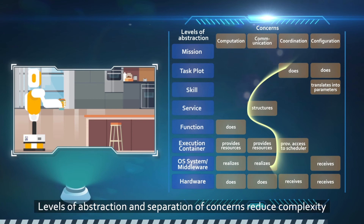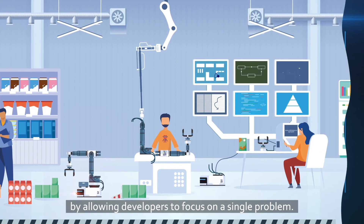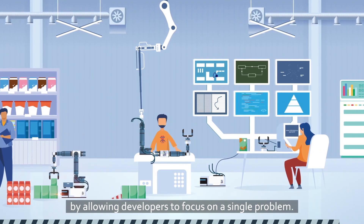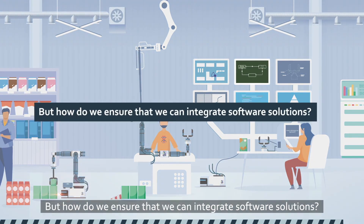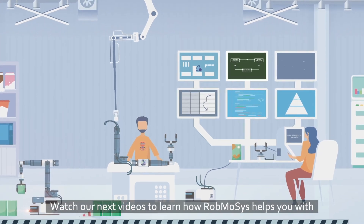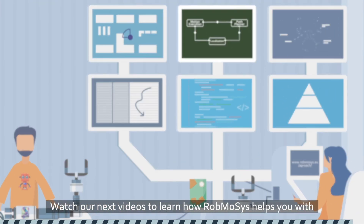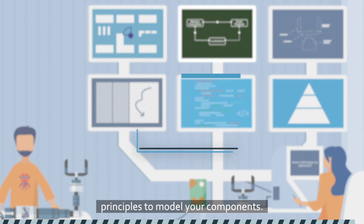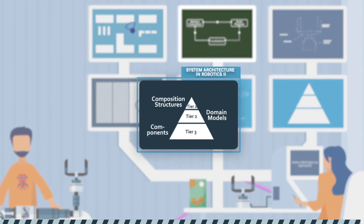Levels of abstraction and separation of concerns reduce complexity by allowing developers to focus on a single problem. Watch our next videos to learn how Robmosis helps you with principles to model your components. Thanks for watching.